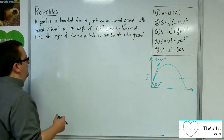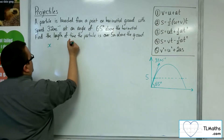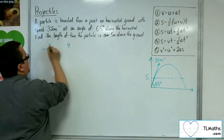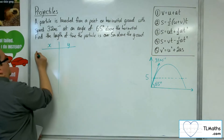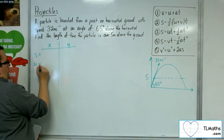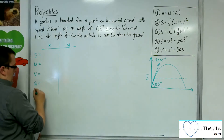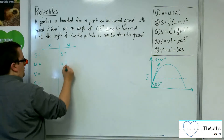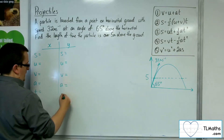So let's write out the SUVAT equation — the SUVAT information that we have for the horizontal and vertical components. So we've got S, U, V, A, and T for horizontal, and S, U, V, A, and T for vertical.